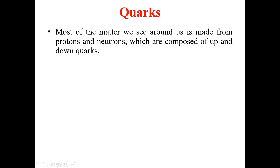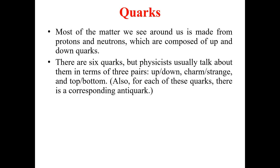There are six quarks, but physicists usually talk about them in terms of three pairs. These three pairs are: up and down quarks, charm and strange quarks, and top and bottom quarks. For each of these quarks there is a corresponding anti-quark. Physicists divide these six quarks into pairs of up/down, charm/strange, and top/bottom.